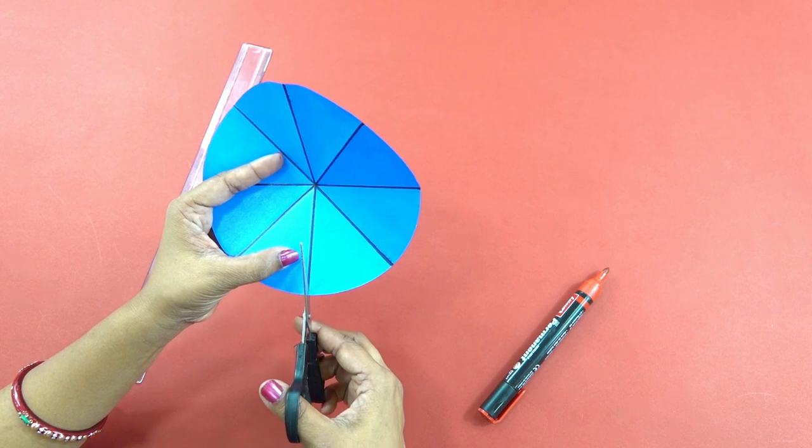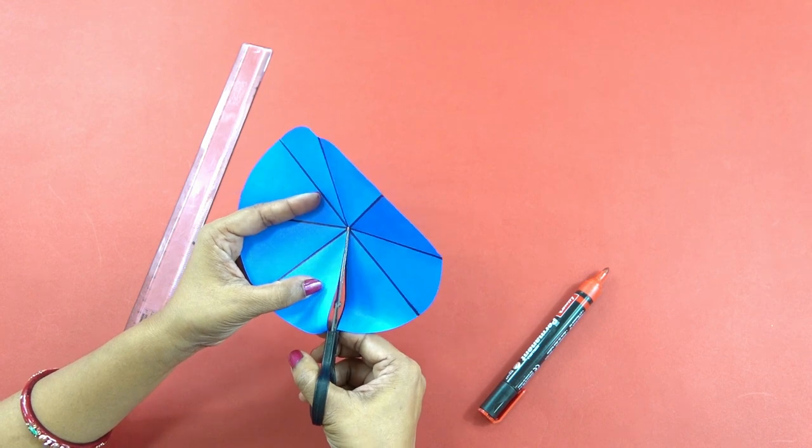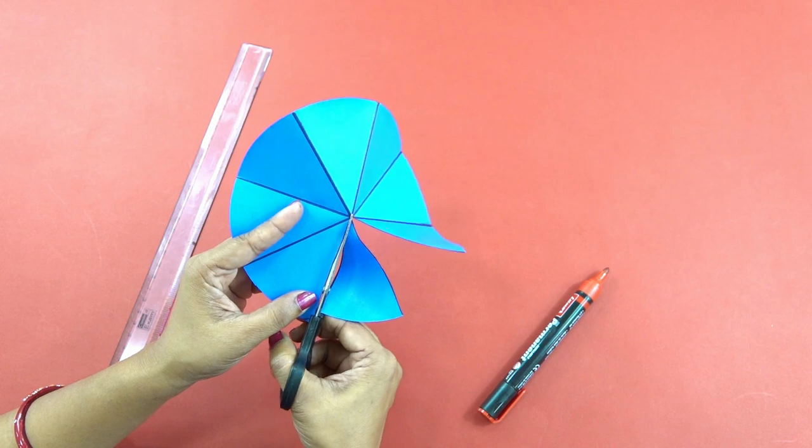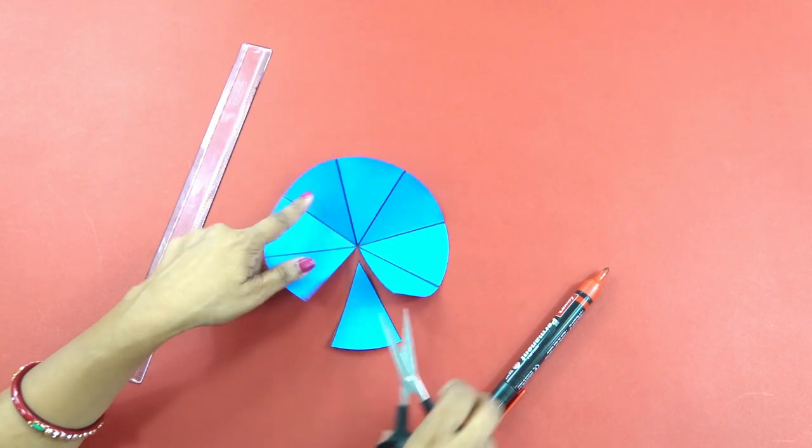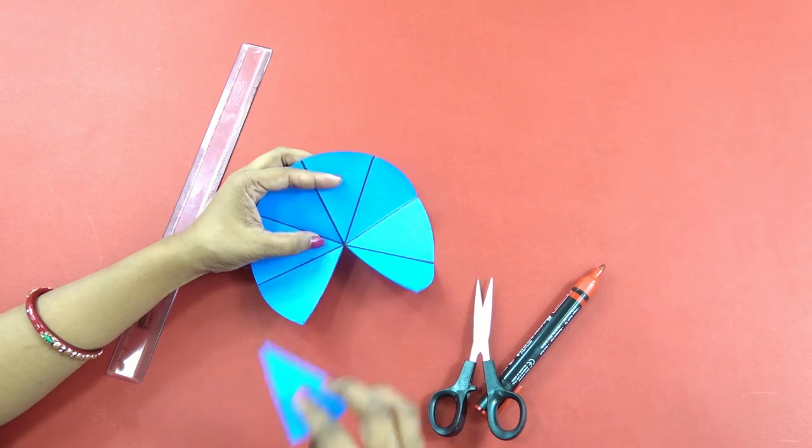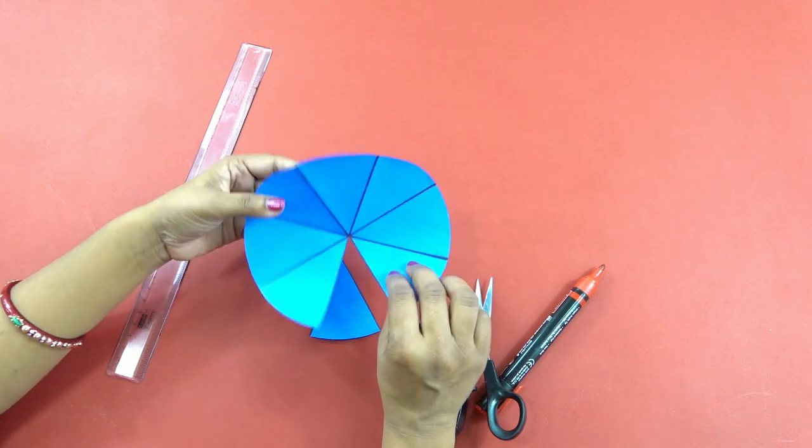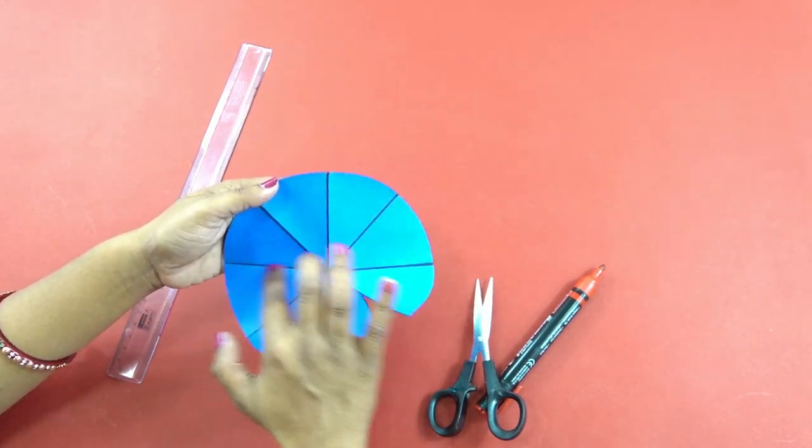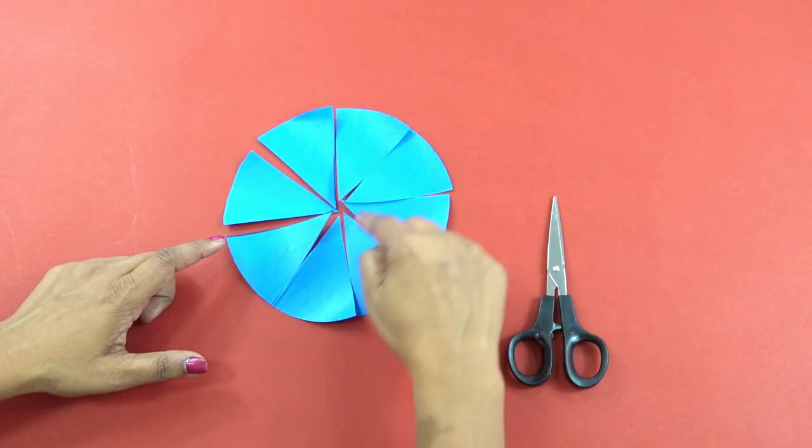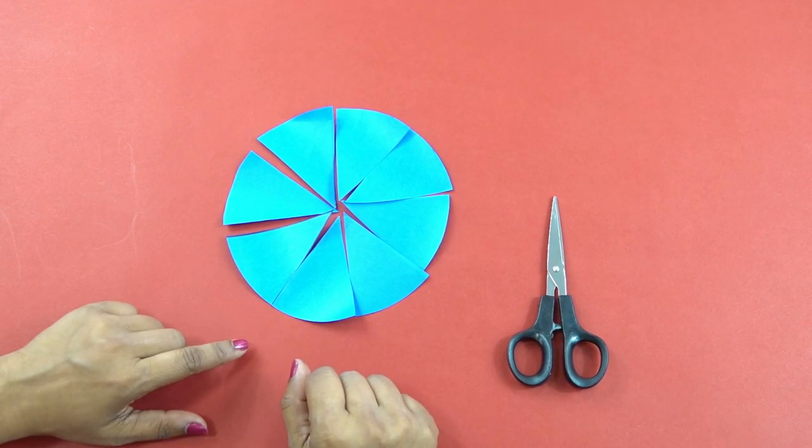Now let us cut these eight parts with the help of scissor. Be careful when you are using scissor. You may find a part of the circle to be out just like the pizza slice. In the similar manner, do the cutting of all the eight parts of the circle. After cutting, we will get eight equal parts of the circle.